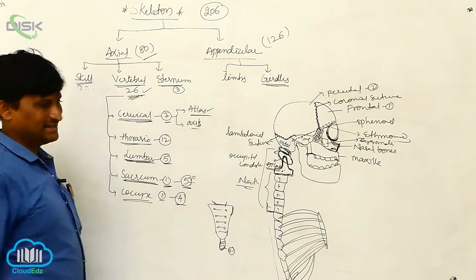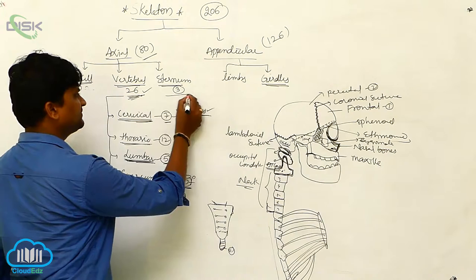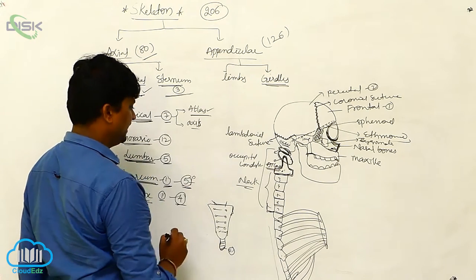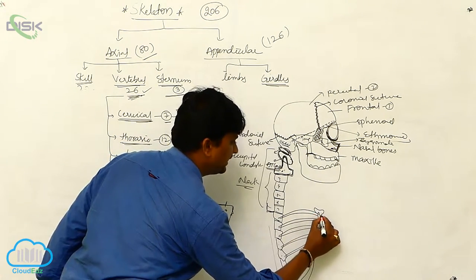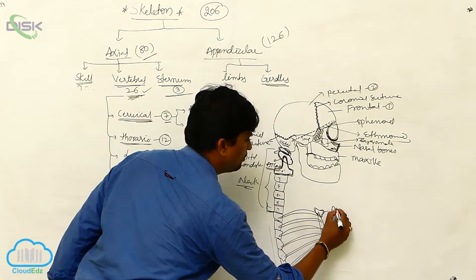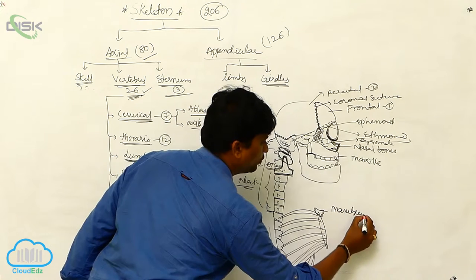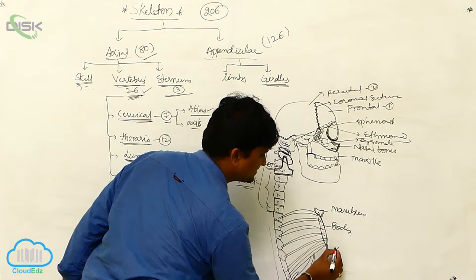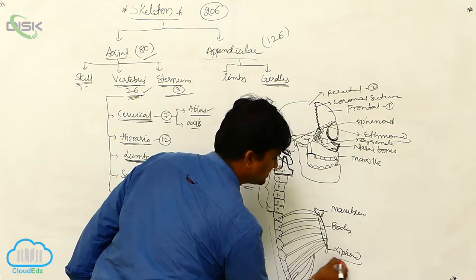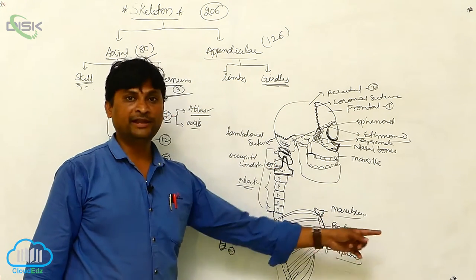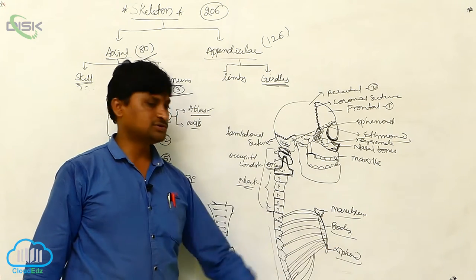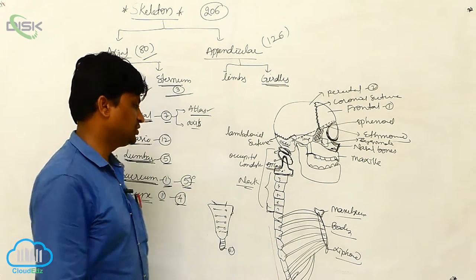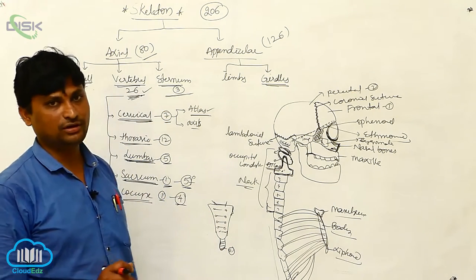Next we consider the sternum, which consists of two main parts. The anterior part is called the manubrium. The distal part is the body. Below the body is the xiphoid process. So the sternum has three parts: the manubrium, the body, and the xiphoid process. Ribs are attached to the sternum via two facets.